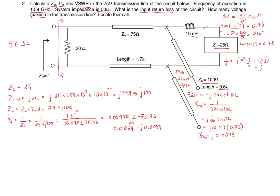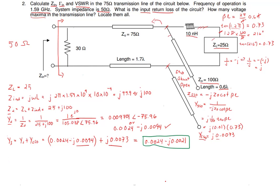That is the admittance Y2 for those two series components. Now we add the stub admittance with Y2 and designate that as Y3. Y3 equals Y2 plus Y_stub. We use rectangular form for Y2 and add the purely imaginary stub admittance, combining the imaginary parts.